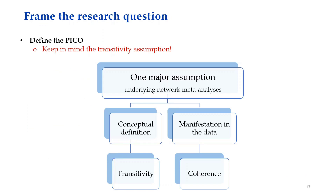As in any meta-analysis, we need to define the PICO. What is important in network meta-analysis is that when we define the PICO at the protocol stage, we need to keep in mind the transitivity assumption. There is one major assumption underlying network meta-analysis, and it has two aspects: the conceptual definition, called transitivity, and its manifestation in the data, called coherence or consistency.